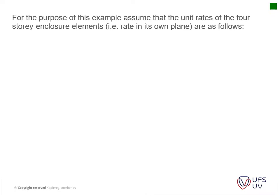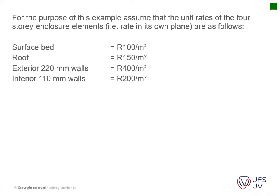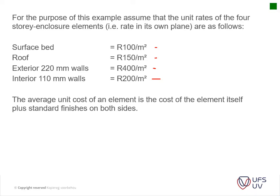For this example, assume that the unit rates of the four story enclosure elements — the rates in their own plane — are as follows from historical data: the surface bed is 100 rand per square meter, the roof area is 150 rand per square meter, the exterior walls are 400 rand per square meter, and the interior walls are 200 rand per square meter.